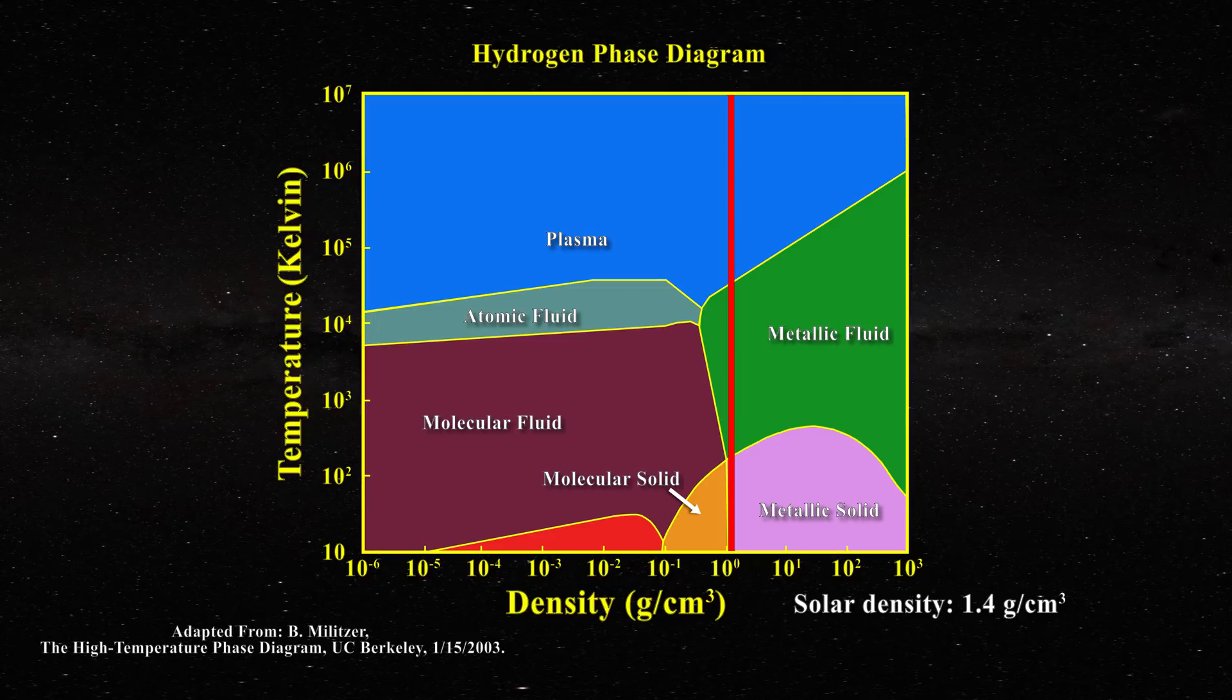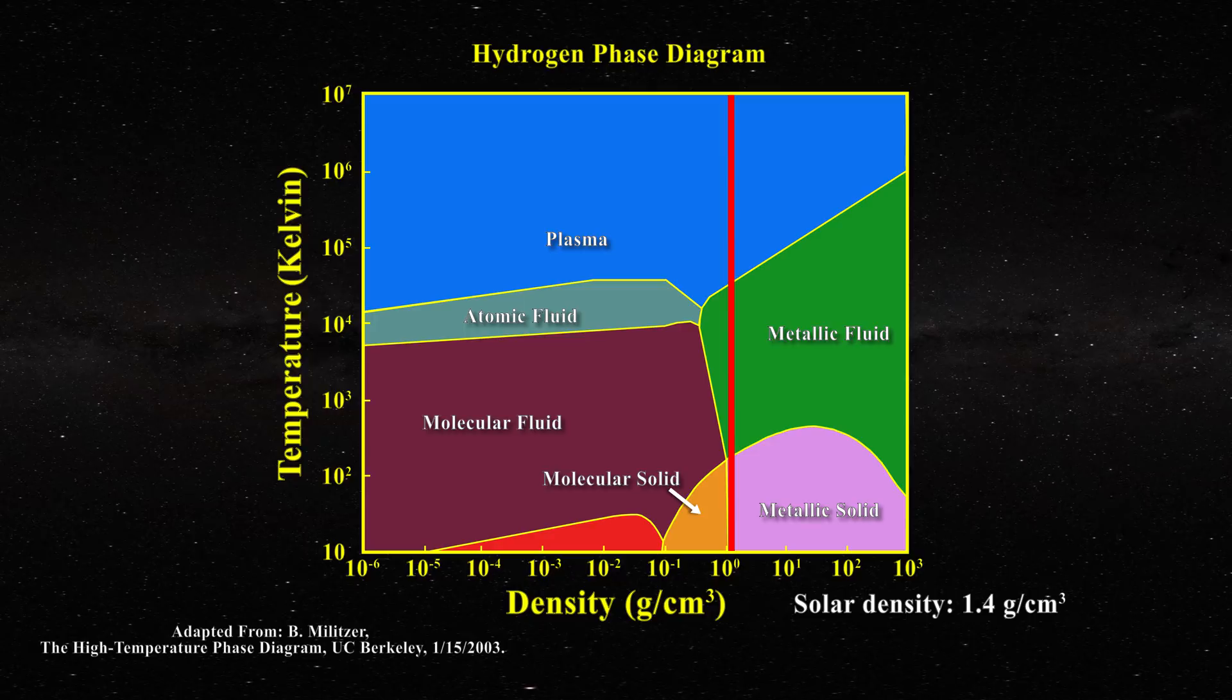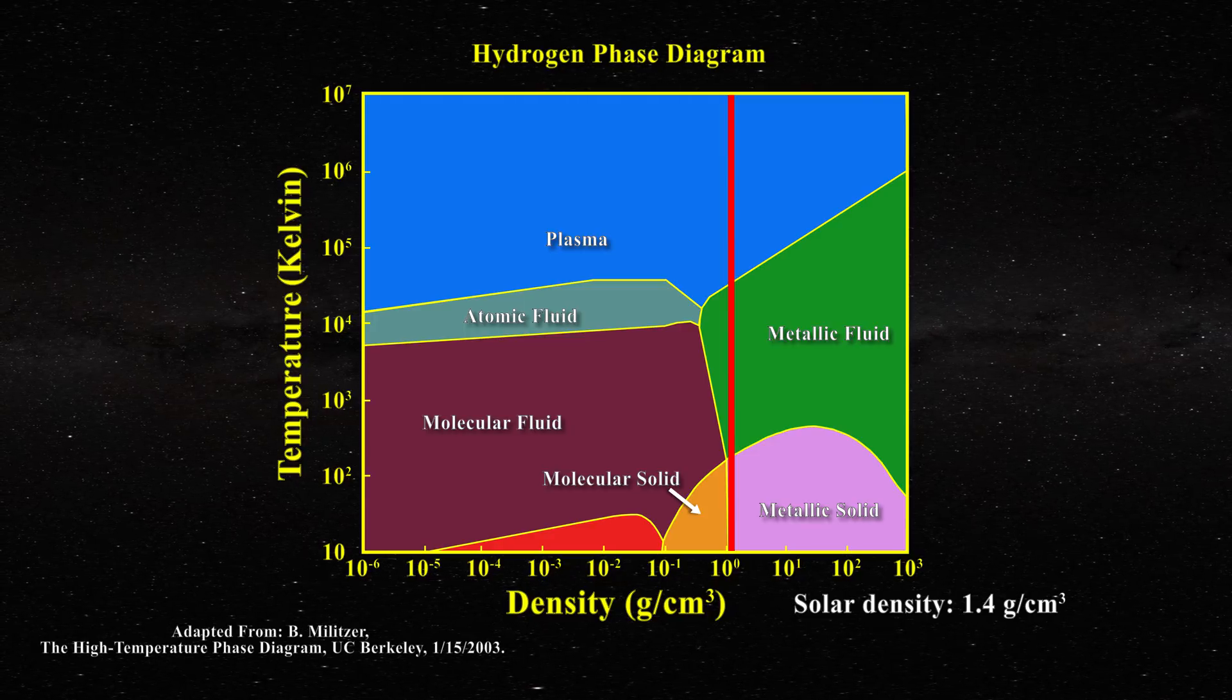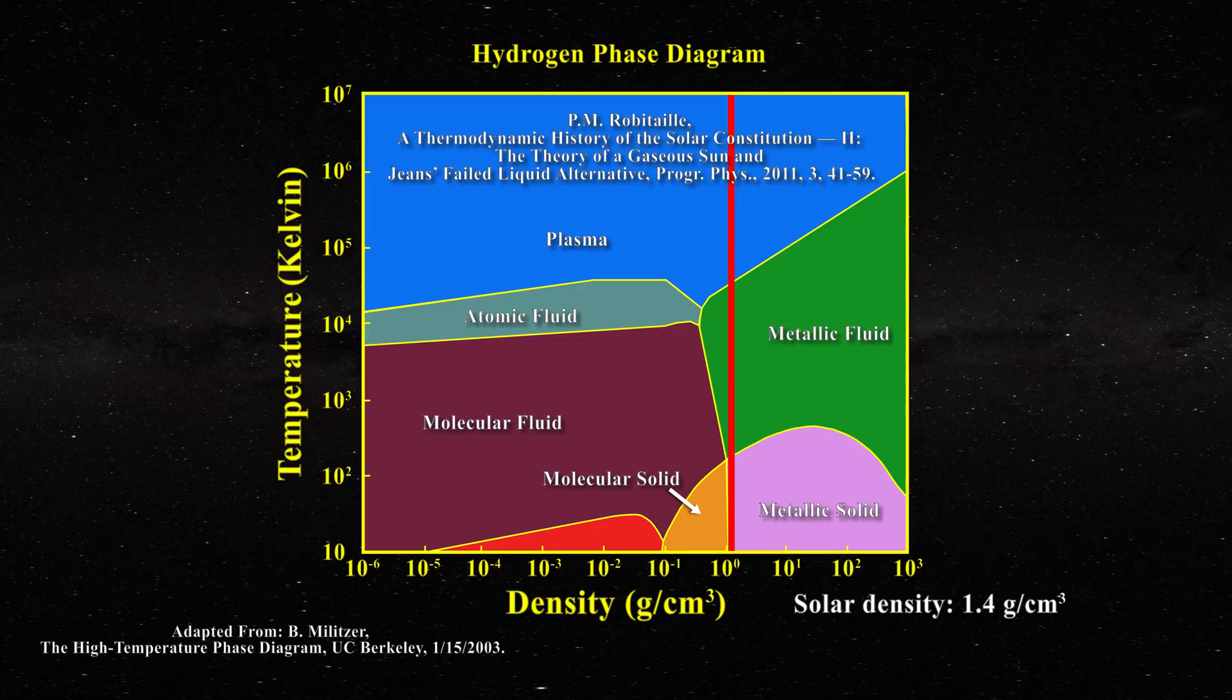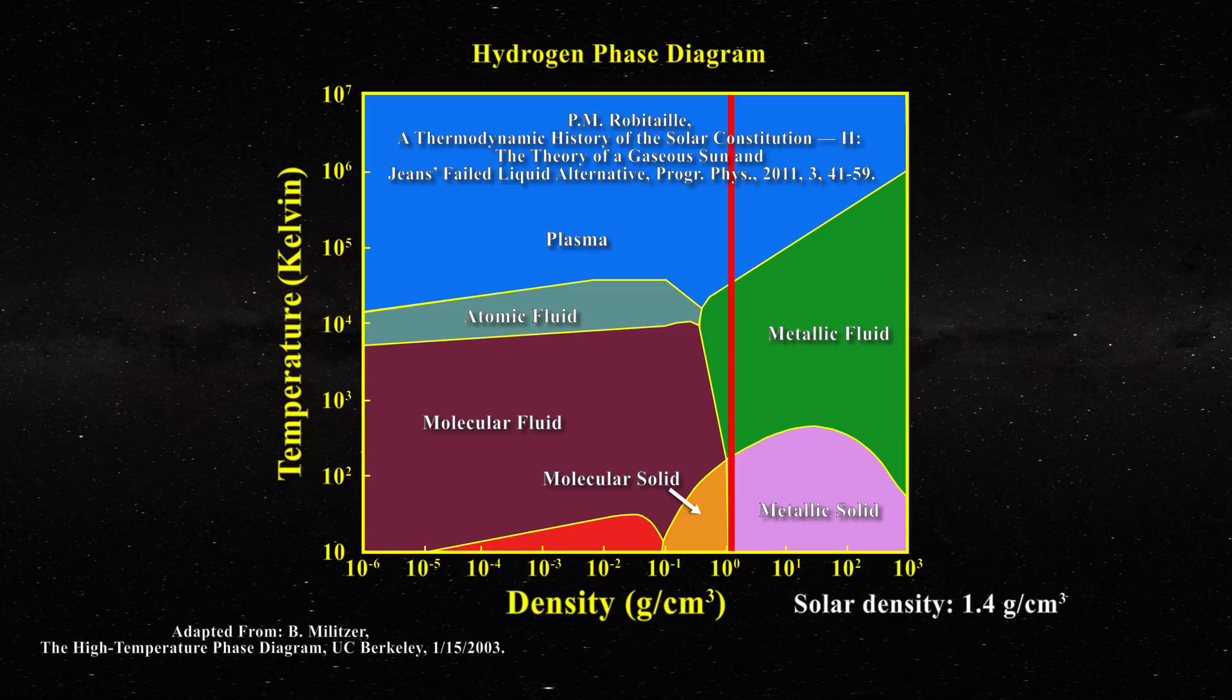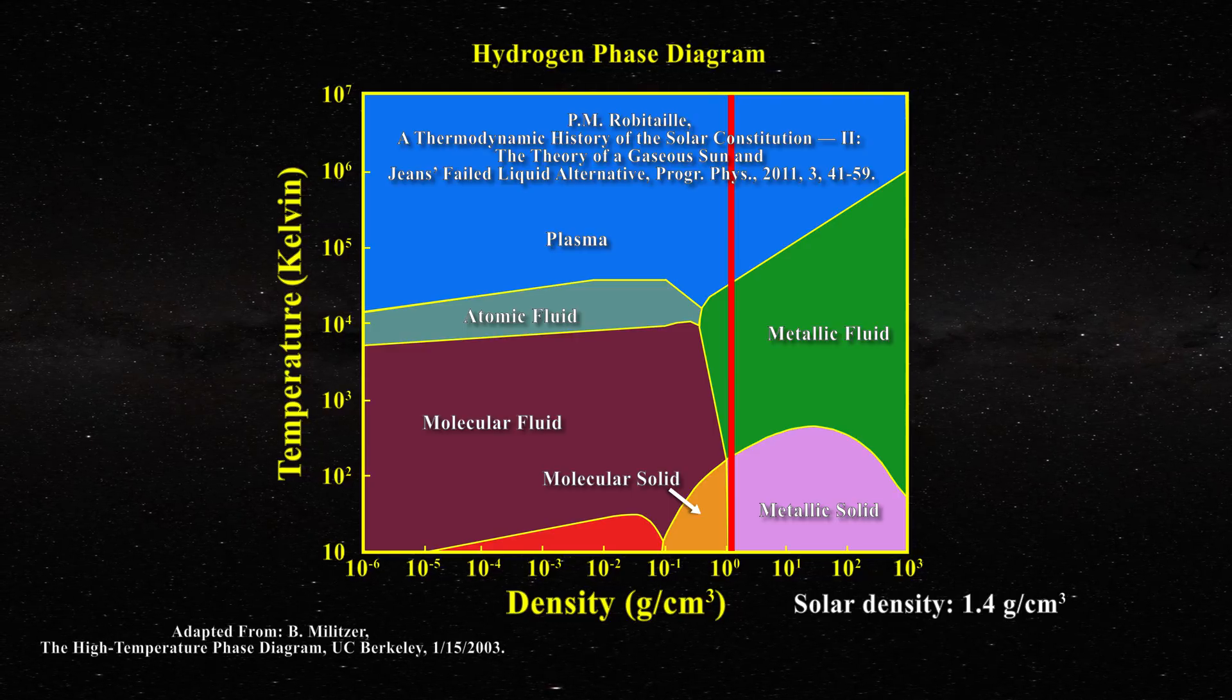One can see that if the body of the sun is comprised of condensed matter with a relatively uniform density throughout, it will exist as a metallic fluid or solid. Remember, in this history paper, I recounted how James Jeans had advanced that the sun might be an essentially incompressible liquid and possess a solar body with a relatively uniform density.